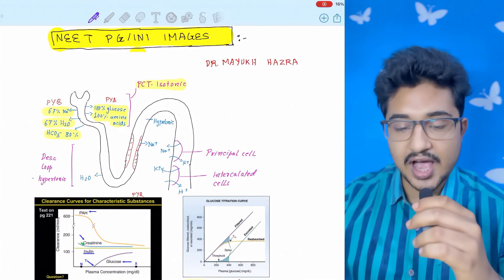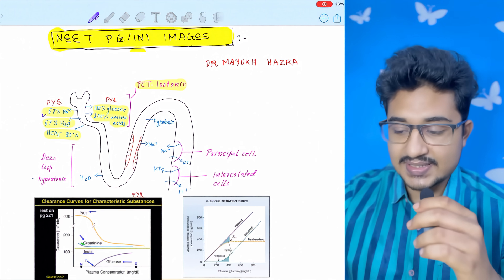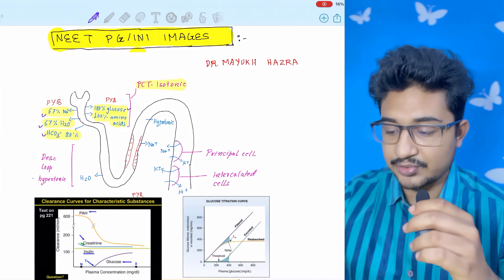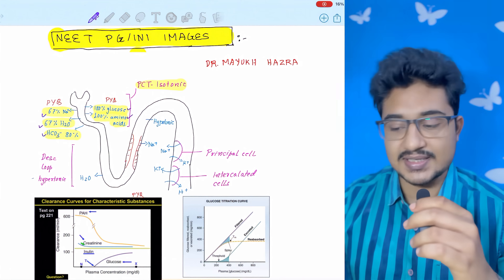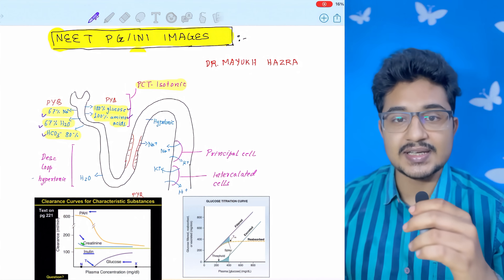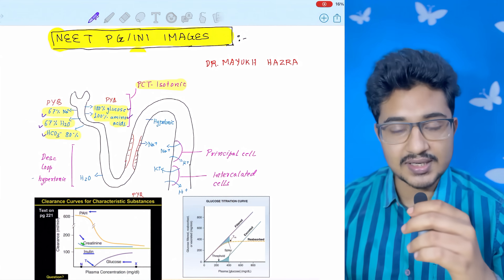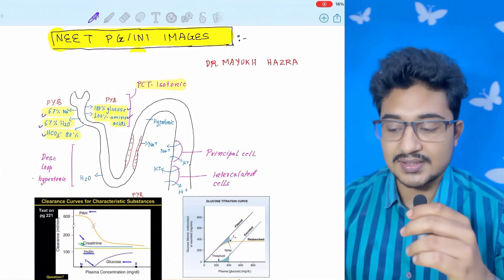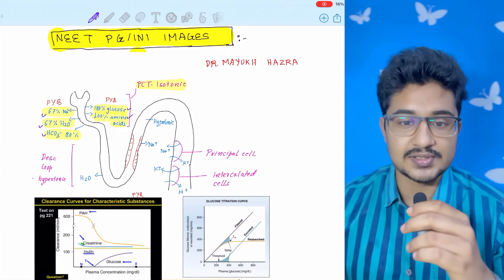First is the reabsorption cycle of the nephron. As you can see in the PCT, 67% of sodium, 67% of water, 80% of bicarbonate, 100% of glucose, and 100% of amino acids are absorbed. So if a question asks, in complete ADH secretion, if the patient is having full ADH secretion, which part of the nephron will absorb the most water, then the answer is the PCT because it absorbs 67% of total water.